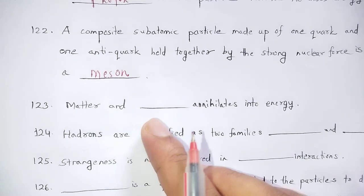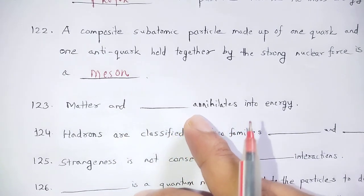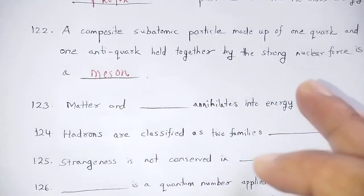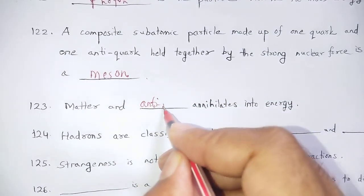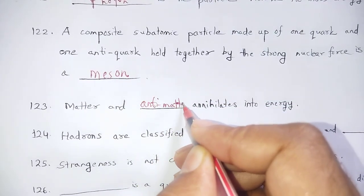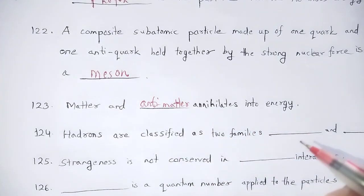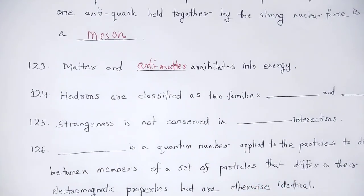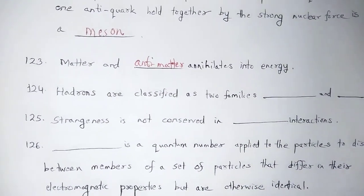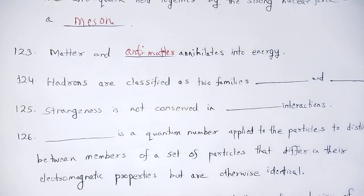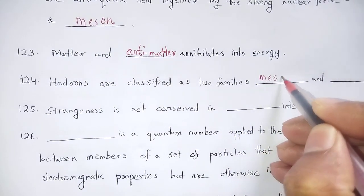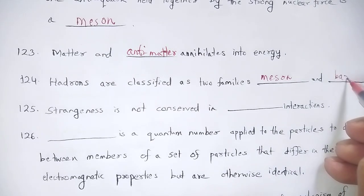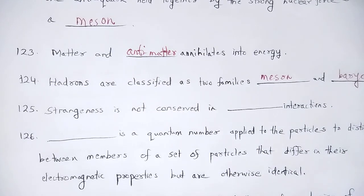Matter and antimatter annihilate into energy — matter and anti-matter collide to produce energy. Hadrons are classified into two families: mesons and baryons — mesons and baryons are collectively called hadrons.